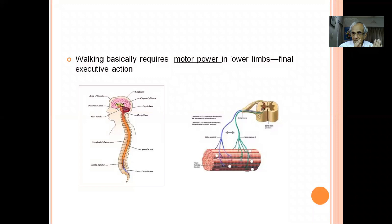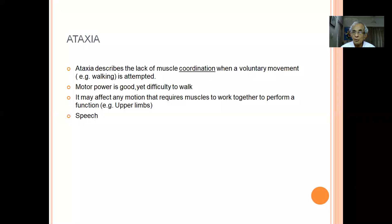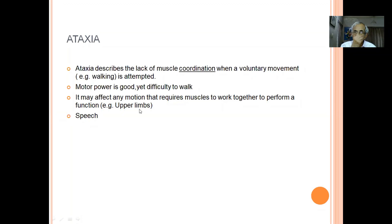Even though everything is in order and the motor system is completely intact, the patient may not be able to walk steadily — that is called ataxia. Ataxia is defined as the lack of muscle coordination when a voluntary movement is attempted. Even though the entire motor system right up to the muscle is intact, it requires another input from the cerebellum for proper coordination. Ataxia can affect upper limbs too, causing difficulty eating, and speech muscles causing dysarthria.